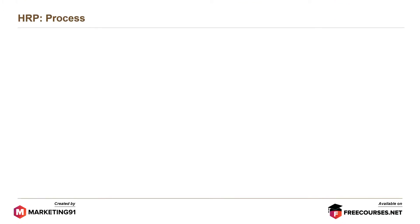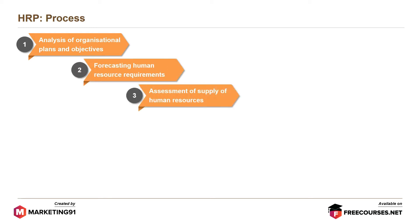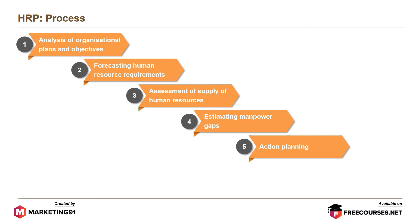There are six steps in the HRP process: analysis of organizational plans and objectives; forecasting human resource requirements; assessment of supply of human resources; estimating manpower gaps; action planning; and monitoring and control.